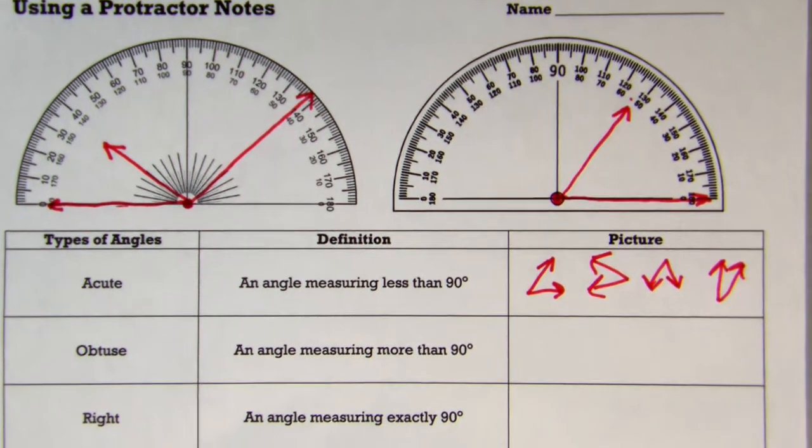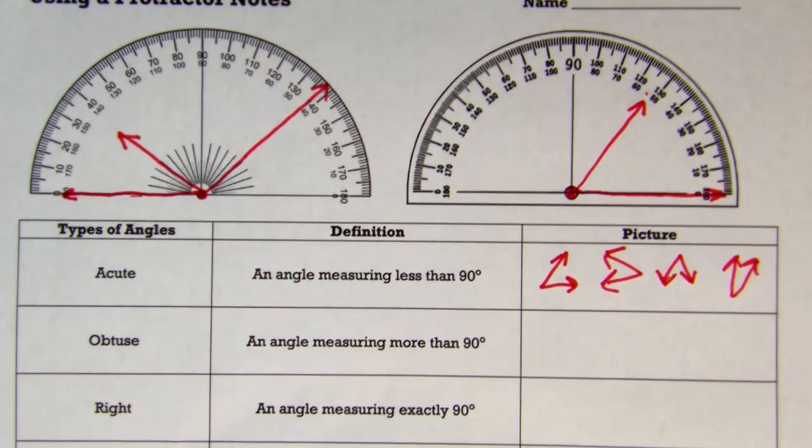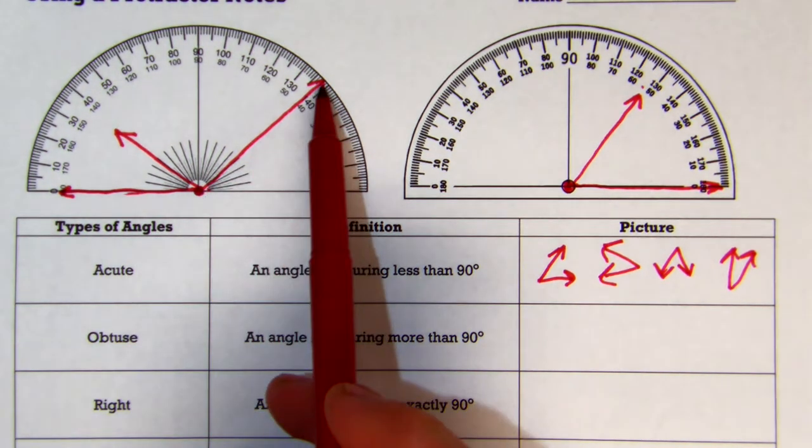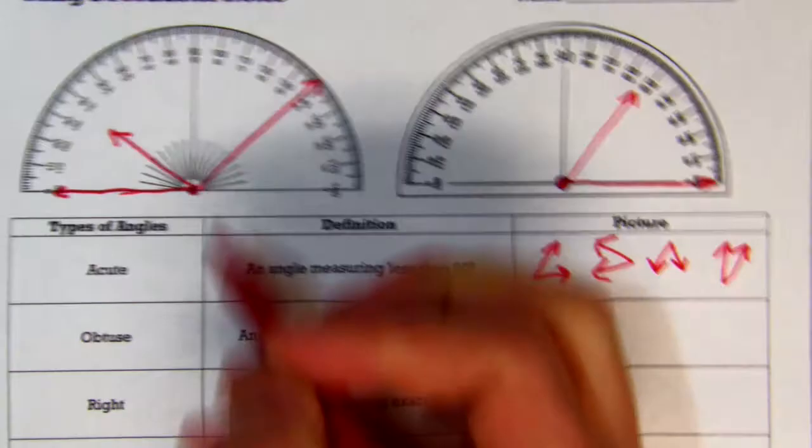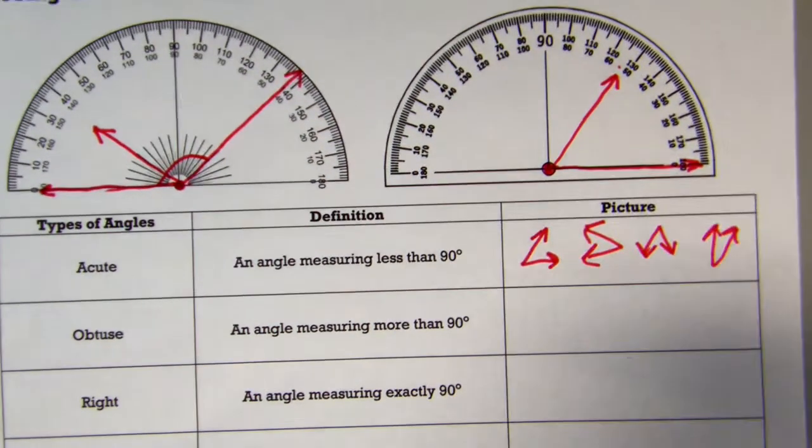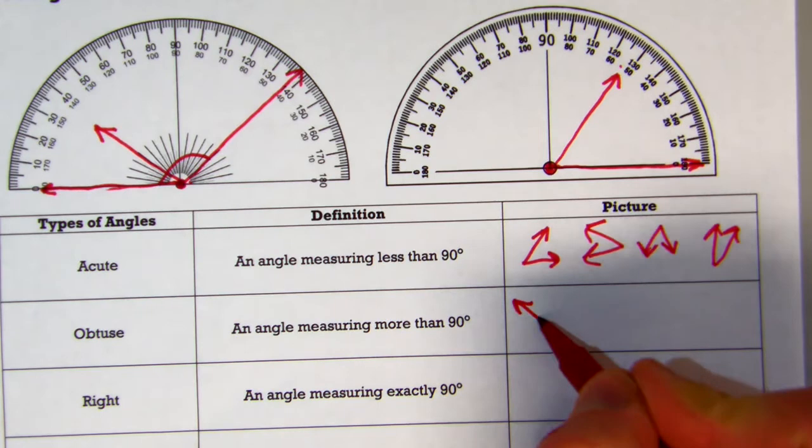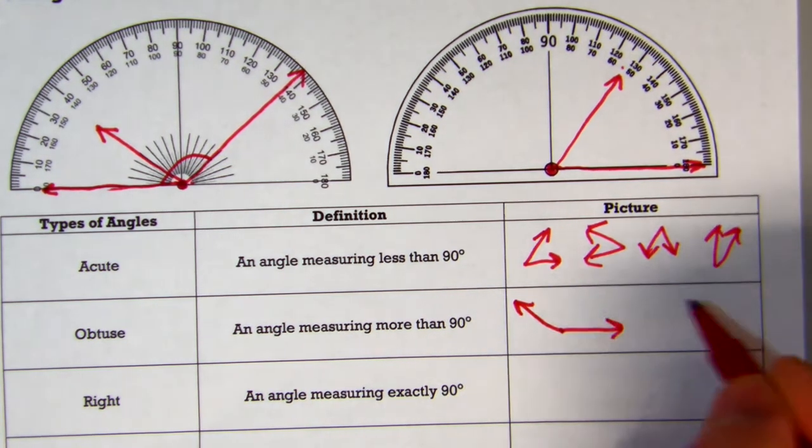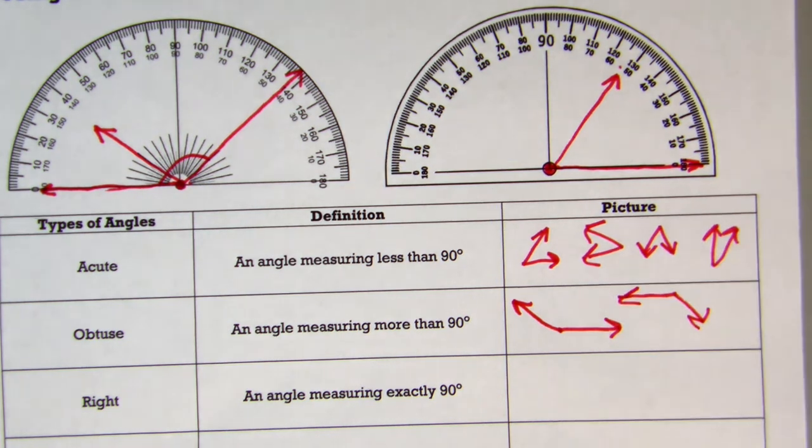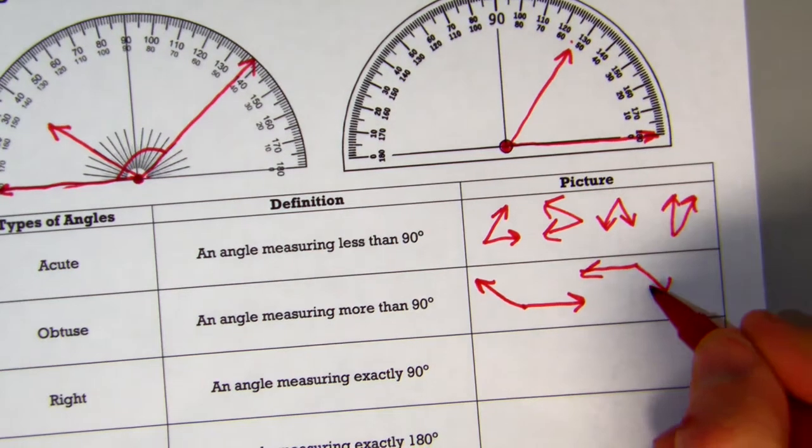Your second one is an obtuse angle. It's an angle measure that's more than 90 degrees. So in this case over here, we have our line at the bottom here, and then we have our other ray going off of it. So we would have 130 some degrees, so that's over 90 degrees. So that is our example of an obtuse. Again, they can be pointing any way you want, as long as it's over 90 degrees. That's the idea.